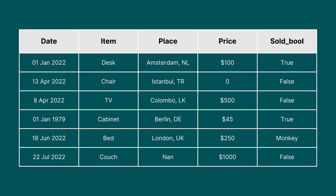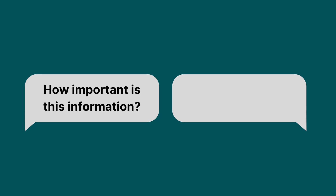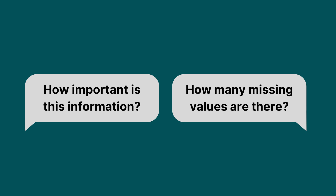Missing values can occur in many different ways. They can be non-values in the dataset, they can look like outliers, they might just be zeros, or a value that looks out of place. What you do with missing values will depend on how important this piece of information is for your problem, and how many missing values there are.